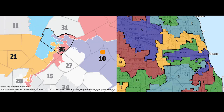What we see here are two maps of congressional districts. On the left, we see some congressional districts in and around Austin, Texas. This black line shows us Travis County, where Austin, Texas is. And on the right map, we see the congressional districts in and around Chicago, Illinois. Pause this video and see if you notice anything interesting about the shapes of these congressional districts.